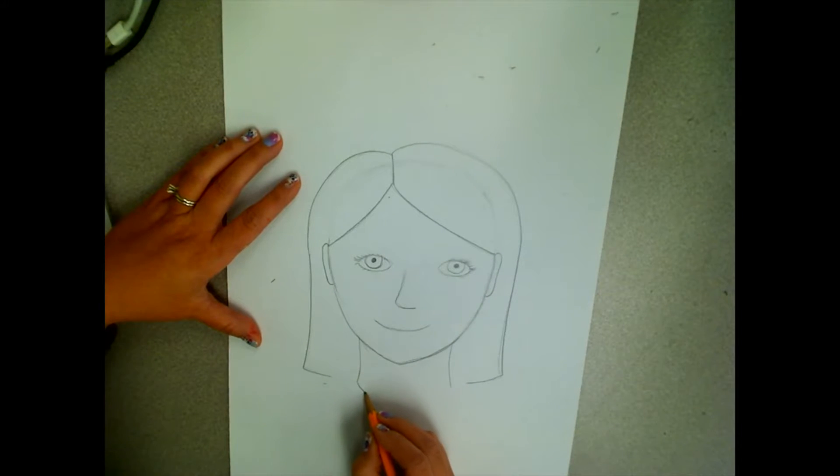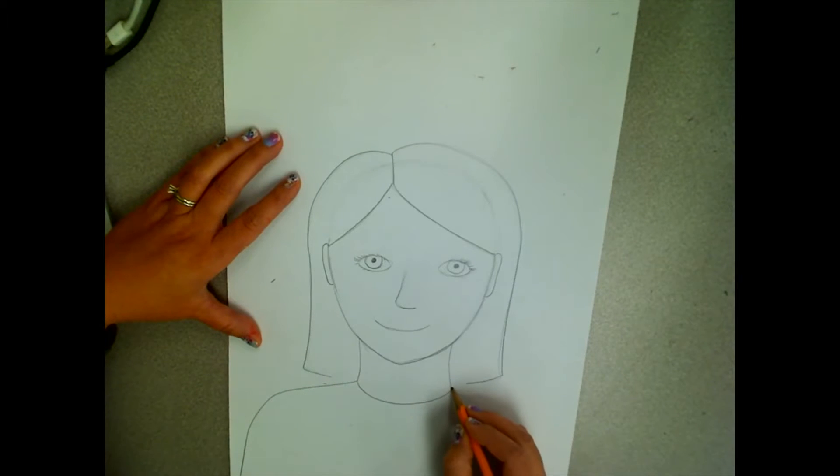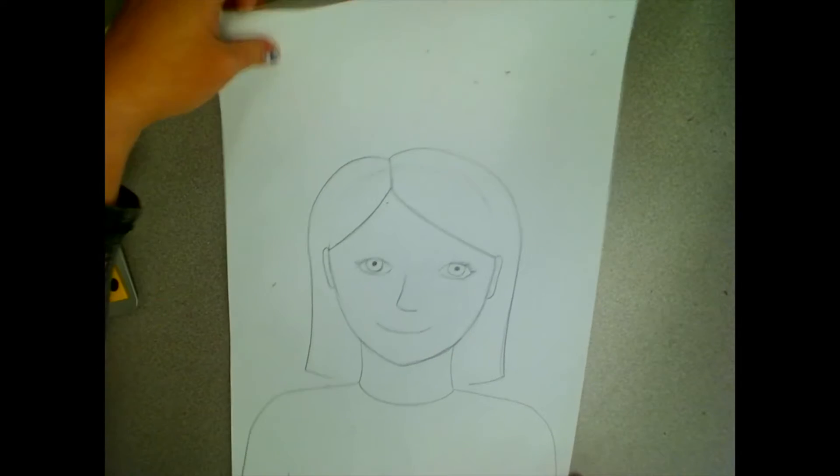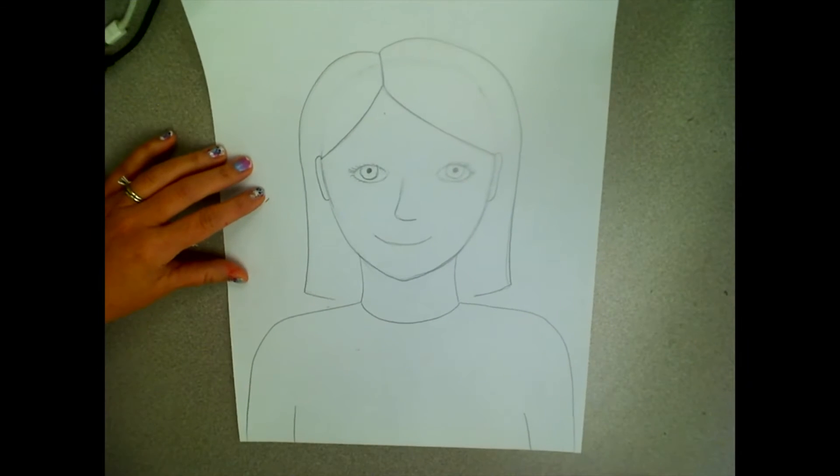So draw a nice thick neck, a line for where your shirt and your neck meet, and then draw your shoulders going straight out, and then down to off the bottom of your paper. I also drew two lines for my armpits.